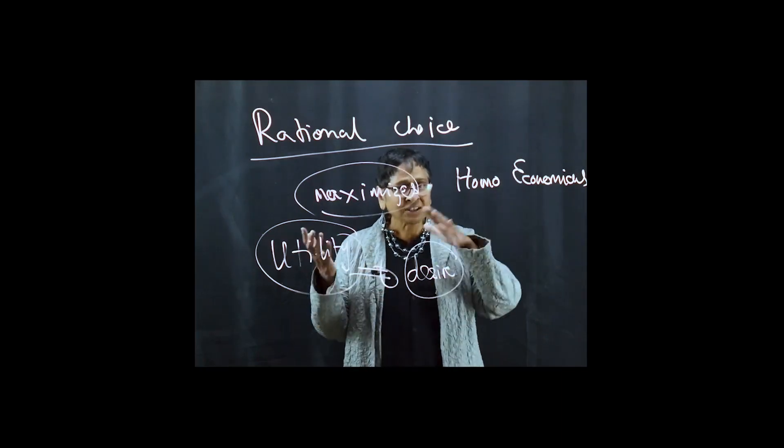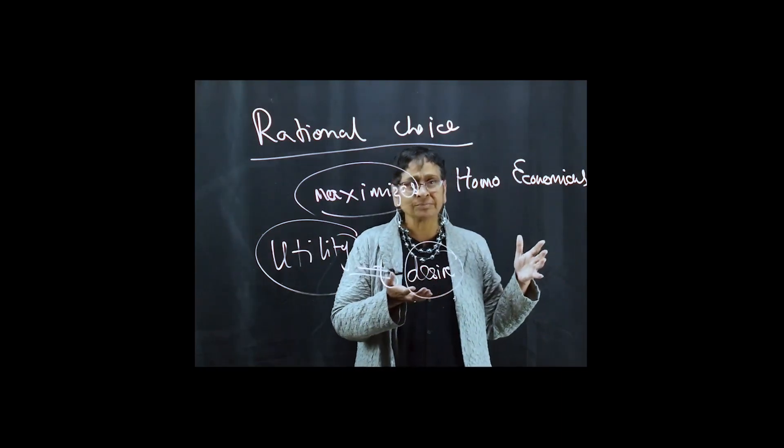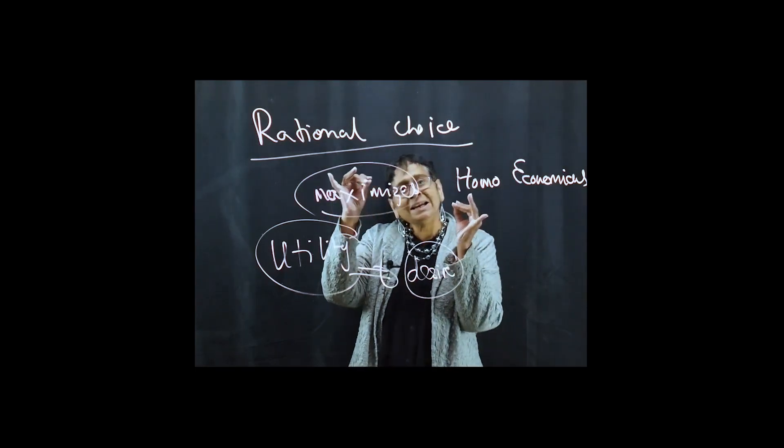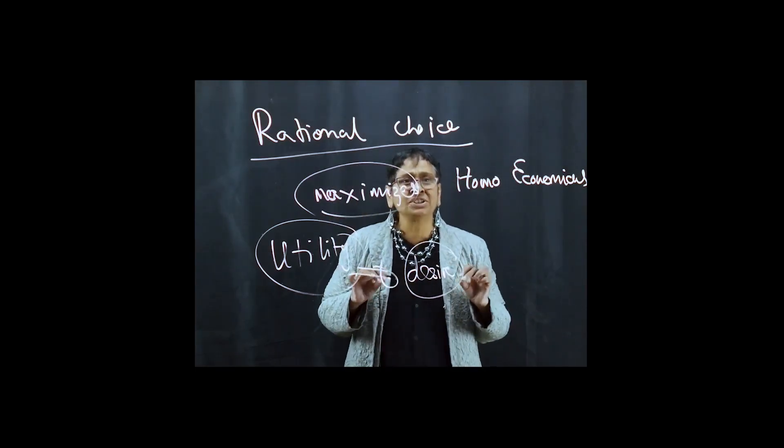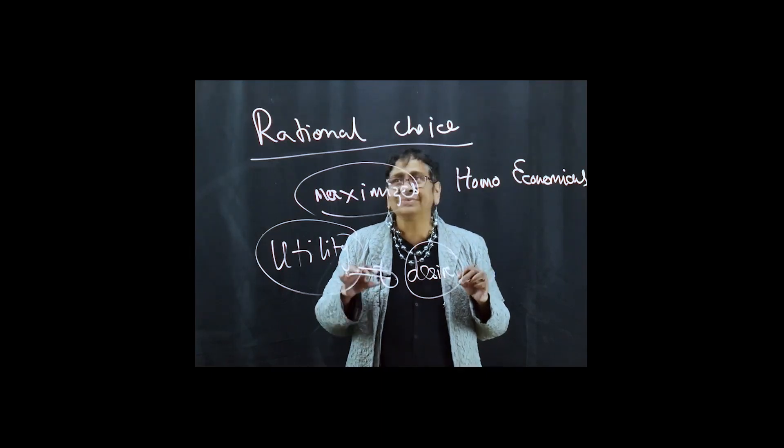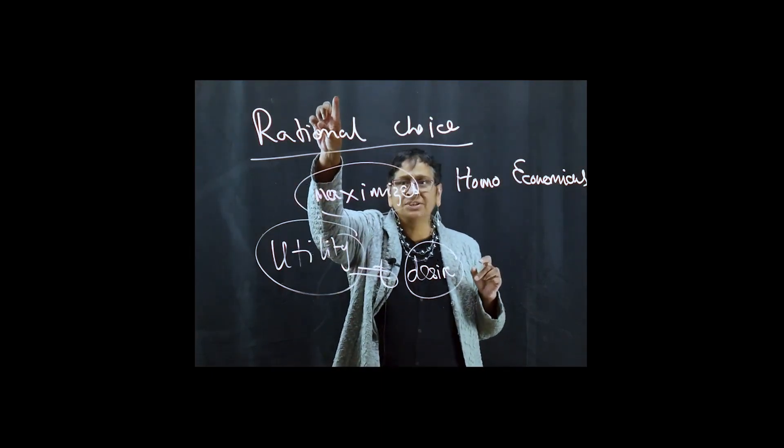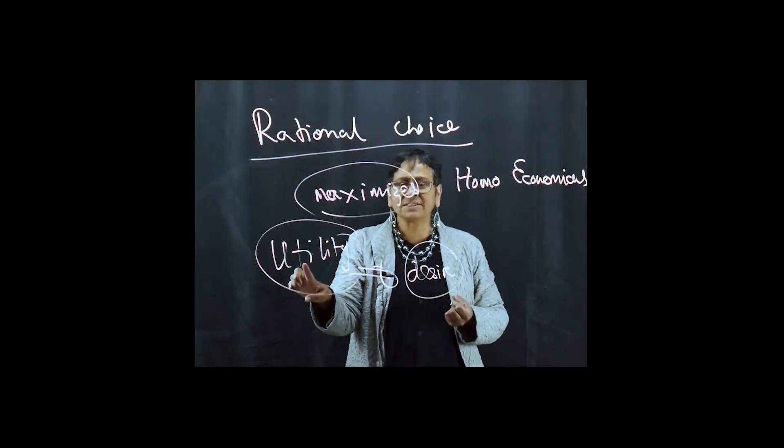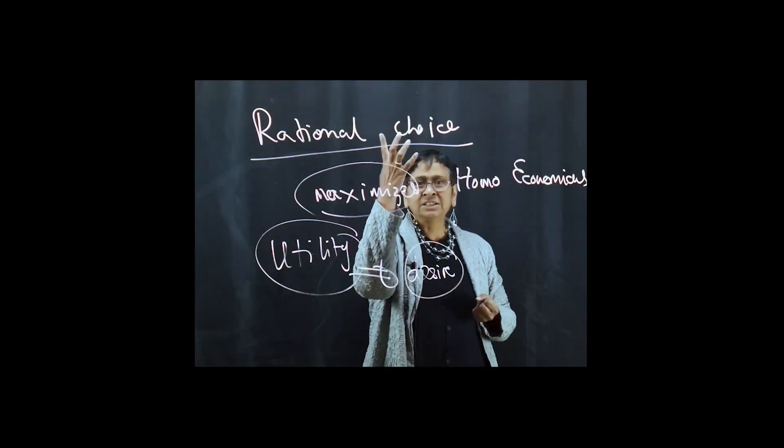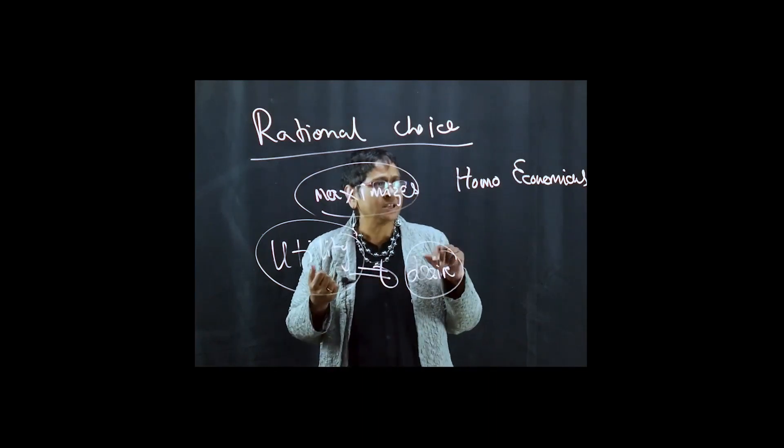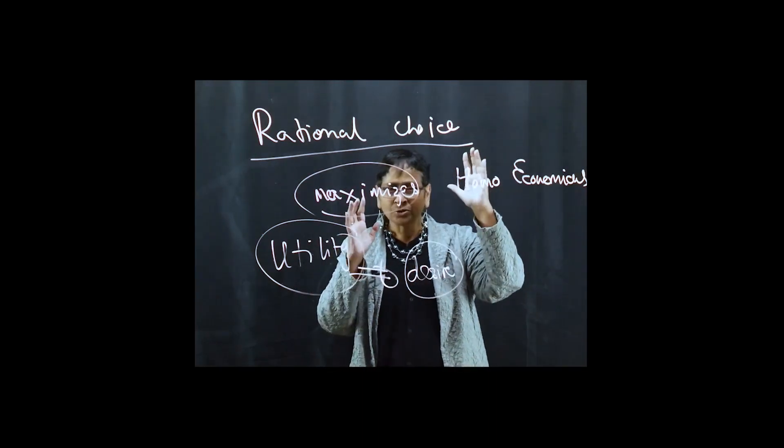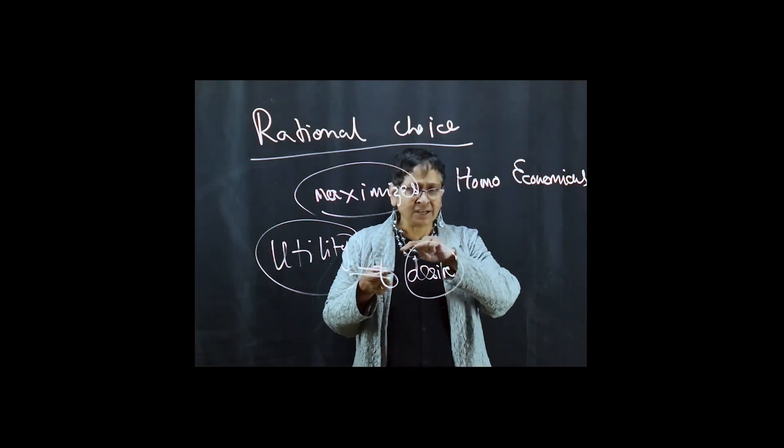So our next two videos are going to just go through the details of the decision making process that rational choice dictates when individuals maximize their utility subject to constraints, when homo economicus is making decisions. So two videos on decision making following.